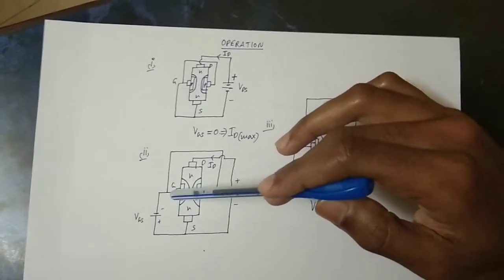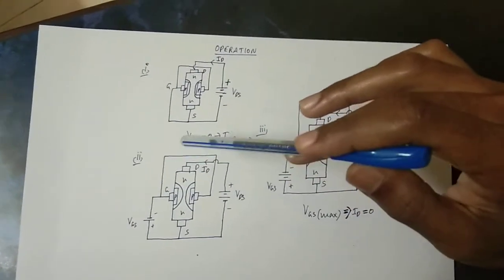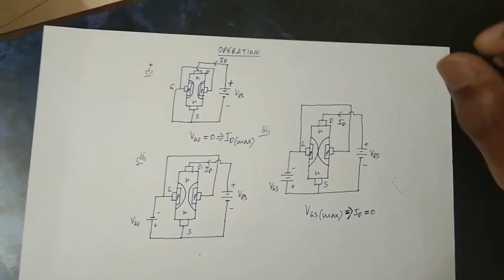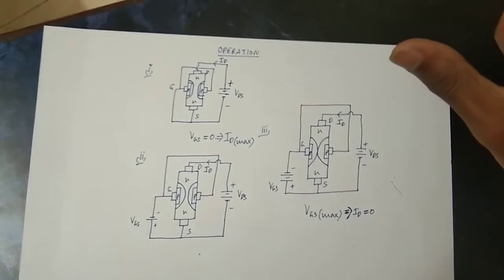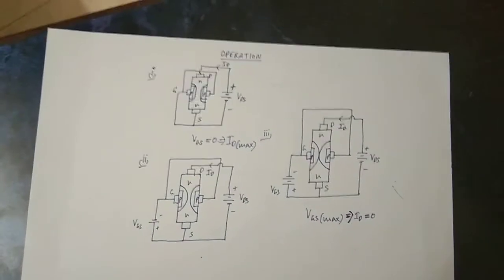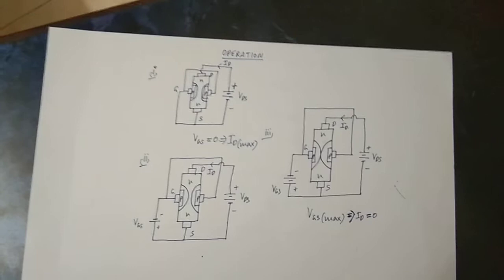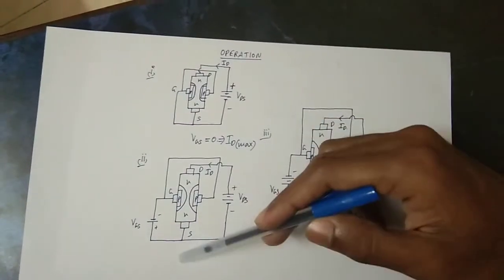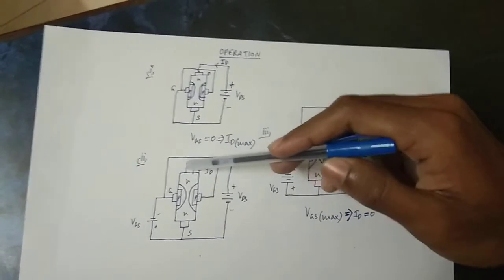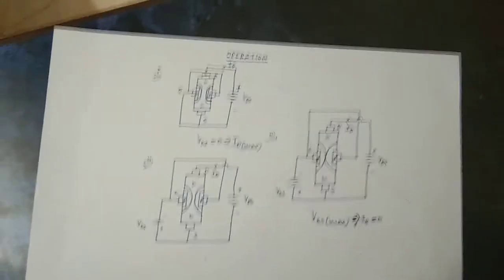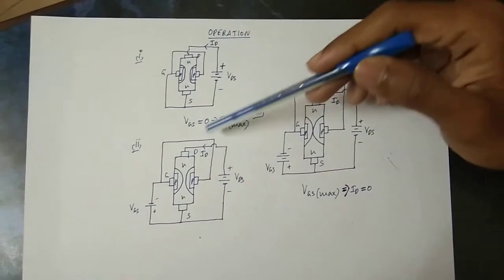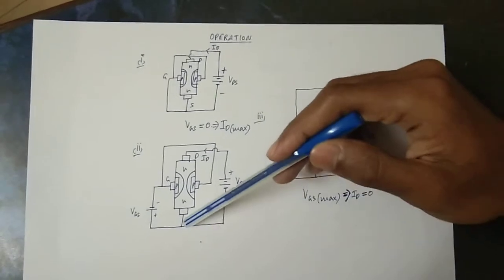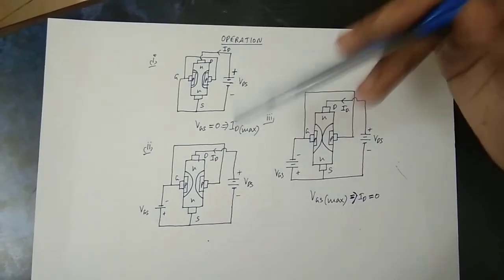On the P-side, under reverse-biased conditions, the depletion region width increases. As the reverse bias increases, the width of the depletion region grows, which narrows the channel and allows less current to flow, effectively reducing the drain current.